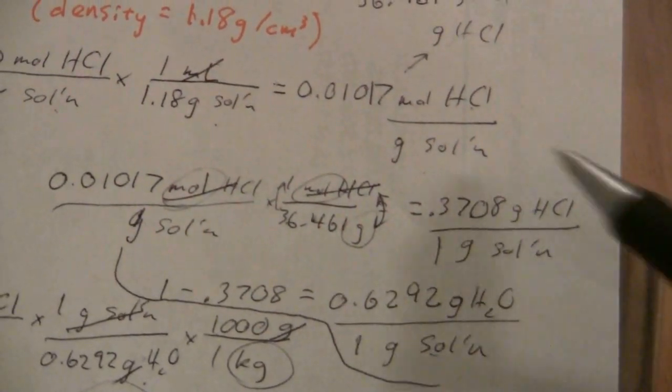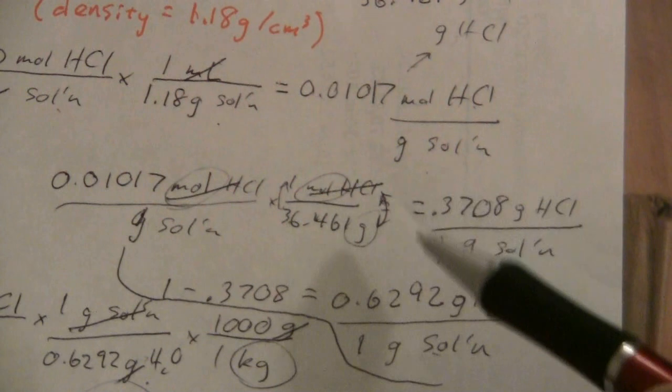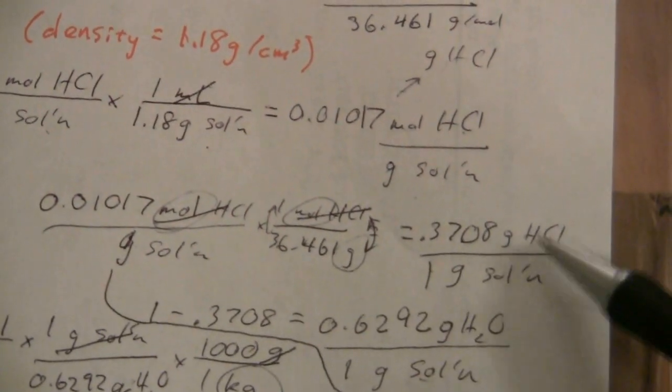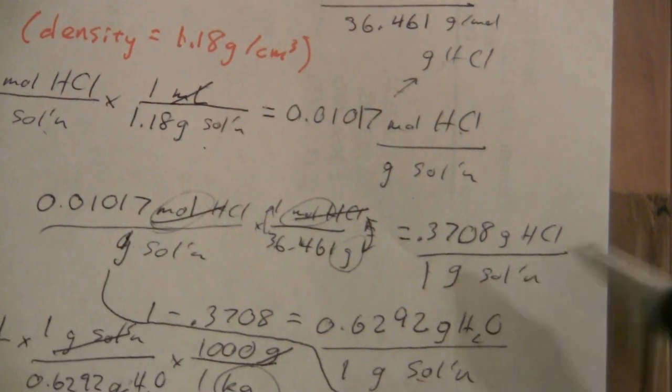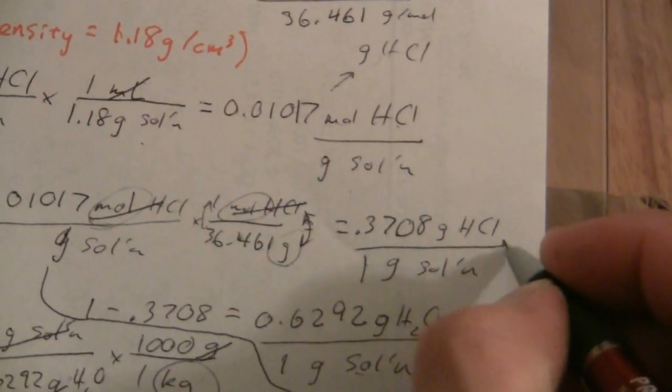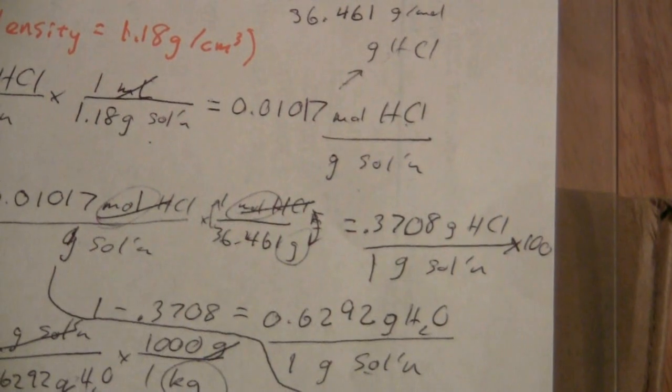We actually very nearly determined it right here because this is grams of HCl per gram of solution. That's percent. All we need to do to make it percent is multiply that by 100.